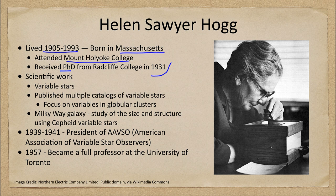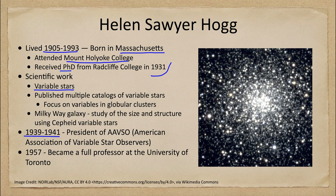Her scientific work was primarily focused on variable stars. From 1939 through 1941 she was the president of the American Association of Variable Star Observers. While things are more automated today, previously you would have to take lots of images of stars to watch for changes in their brightness. Some of the things she looked at included globular clusters, such as the one pictured here, which she had added to the Messier catalog of objects.